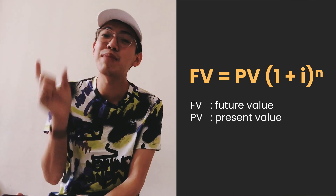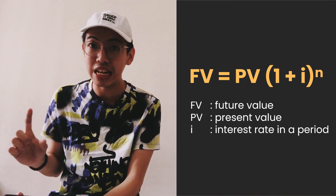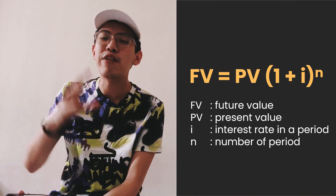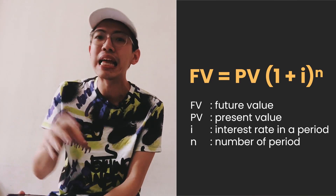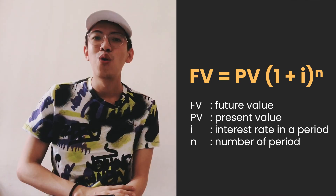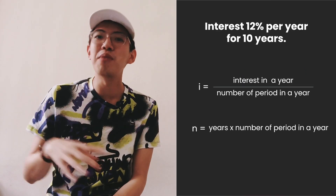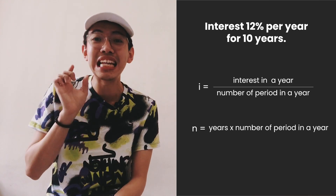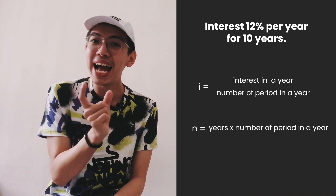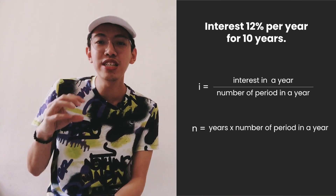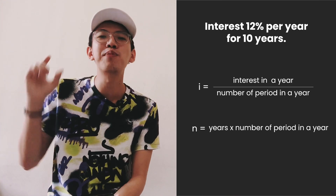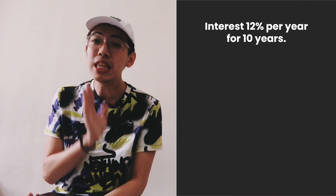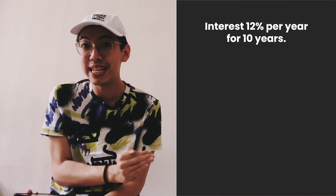Remember that i is the interest rate per period, not per year, and n is the number of periods, not the number of years. To find i: i = annual interest rate ÷ number of periods in a year. For n: n = number of years × number of periods per year.